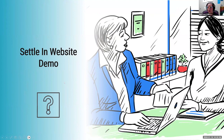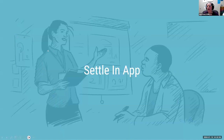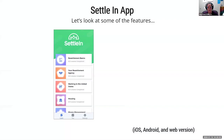The next piece of Settle In we want to demonstrate is the app. The app is designed to be an on-the-go companion to the website. It has the same information as the website but formatted in a different way. The app is available on iOS/Apple devices, Android, and there is also a website version of the app, which is very helpful for use in a classroom setting or when sitting side by side with a client and a laptop. Multiple topics are available on the app — the same topics you will see on the Settle In website — and each topic breaks out into multiple individual lessons.